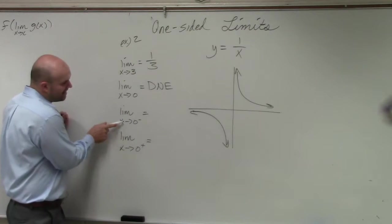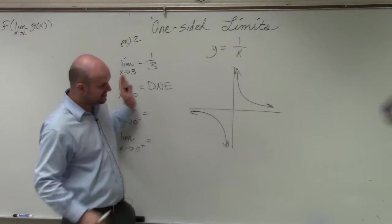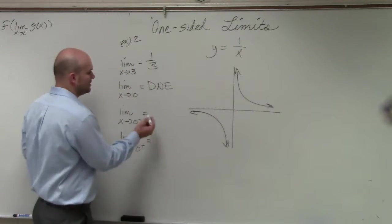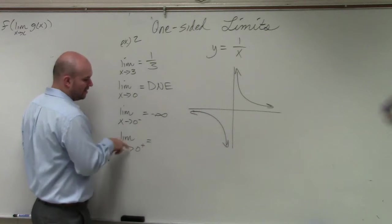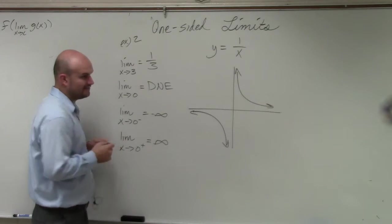So as my x values are approaching here from the left, so as we're going from the less than values to the right, you can see that the graph is shooting down and it's approaching negative infinity. It's going down to negative infinity, whereas we're approaching from the right-hand side, the graph is approaching infinity.